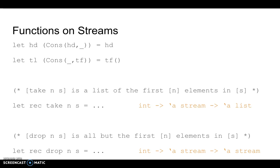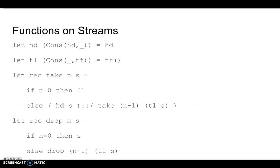Take a moment to think about what the solutions to these two functions would be. Now let's discuss how these functions are written. For take, the base case is if n equals 0, then we're returning an empty list. This makes sense because taking 0 elements from a stream should always return an empty list.